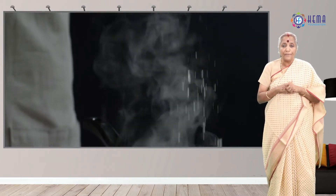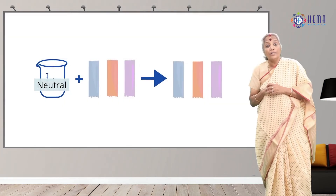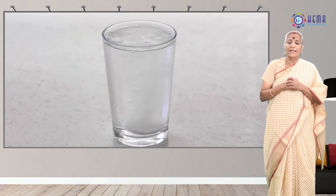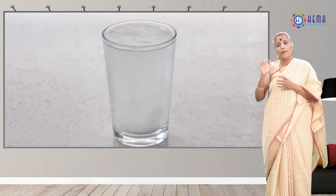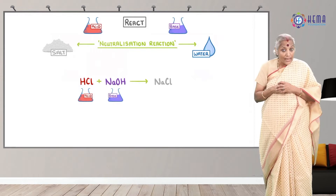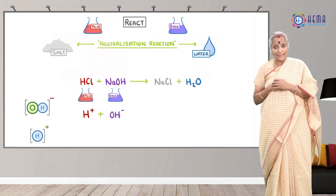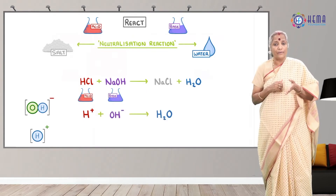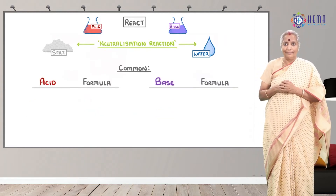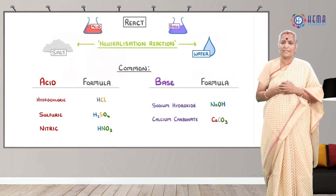Salt is a neutral substance whose aqueous solution does not affect litmus. Acids are substances that contain one or more hydrogen atoms. An acid and a base neutralise each other and form a salt. A salt may be acidic, basic or neutral in nature. If the acid is strong and the base is also strong, a neutralisation reaction takes place completely.